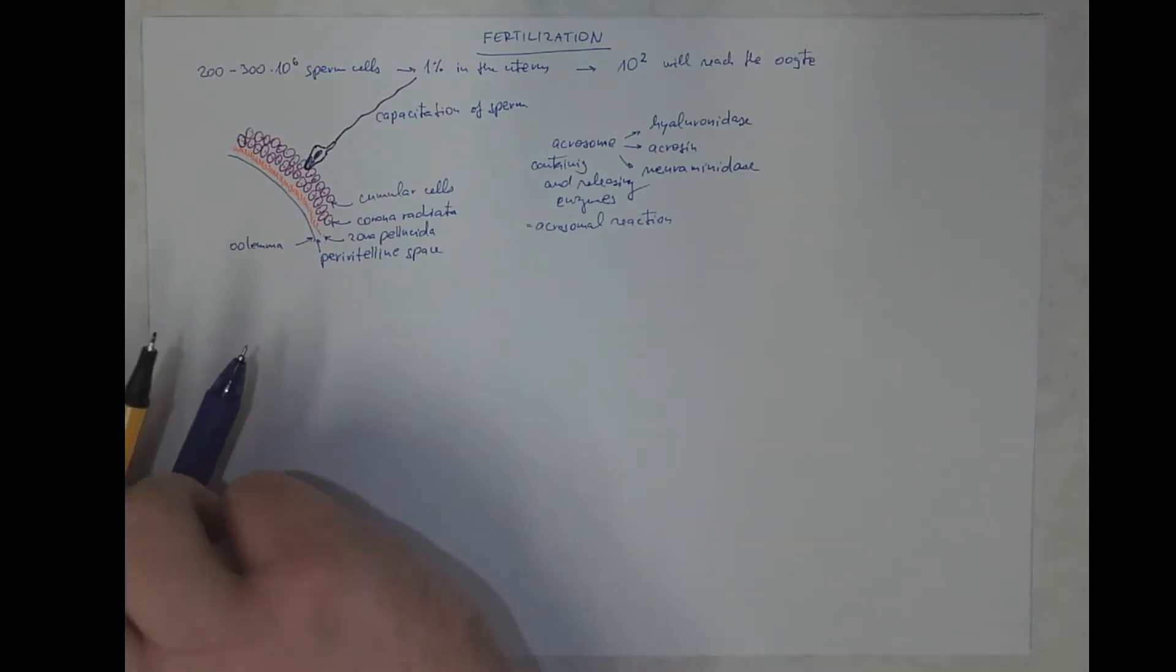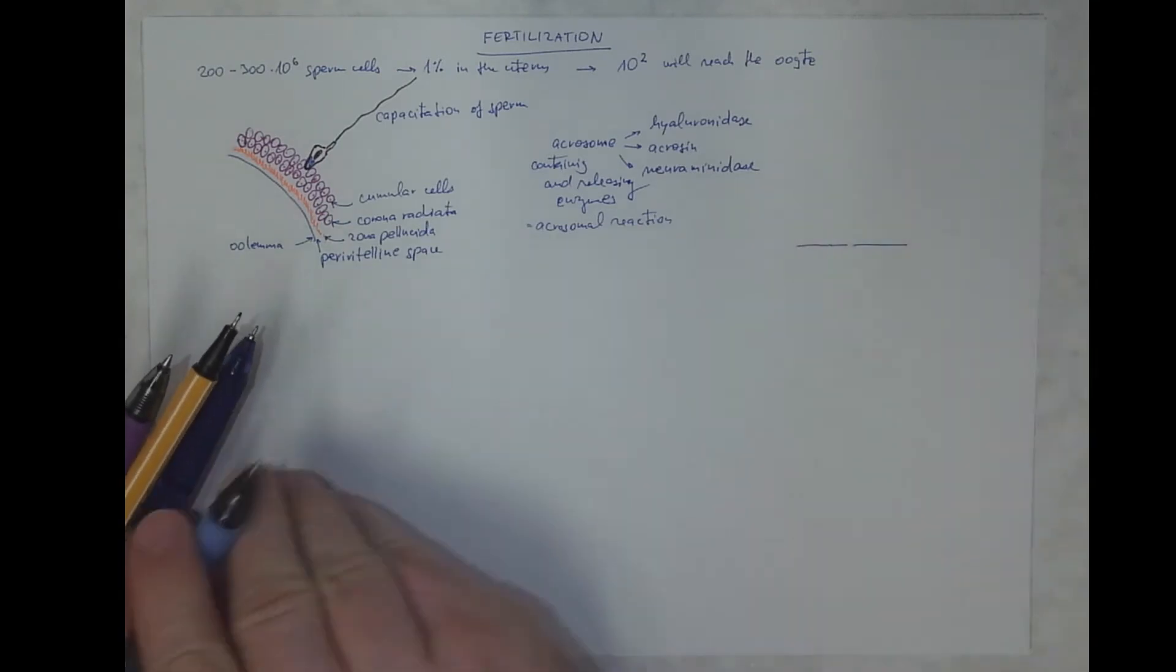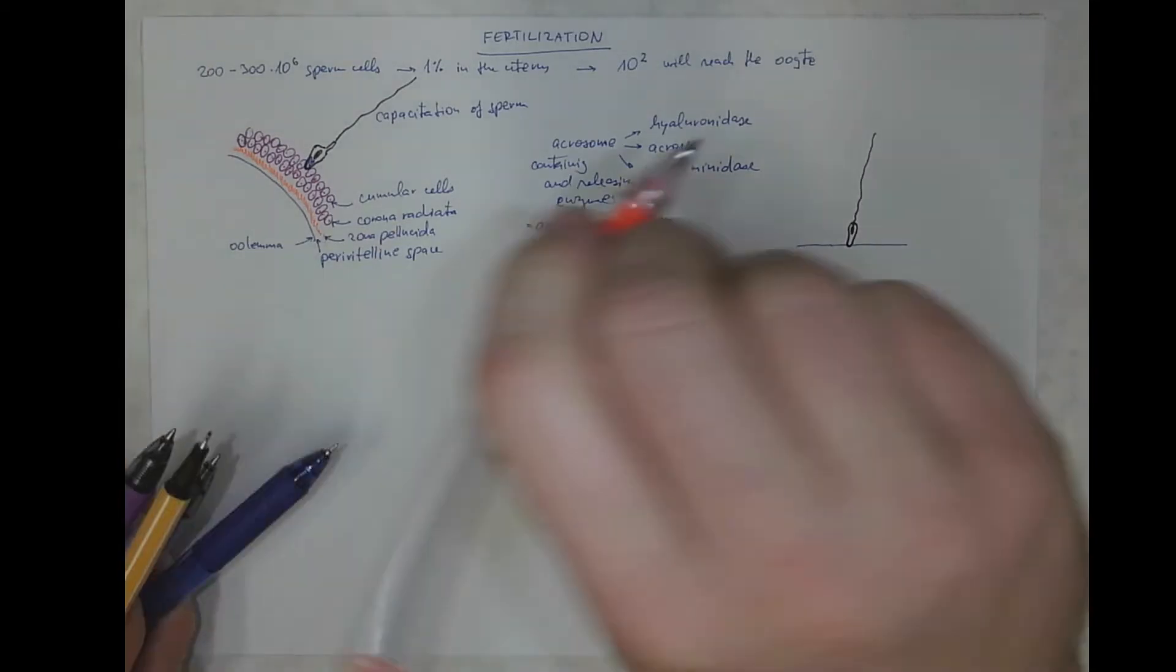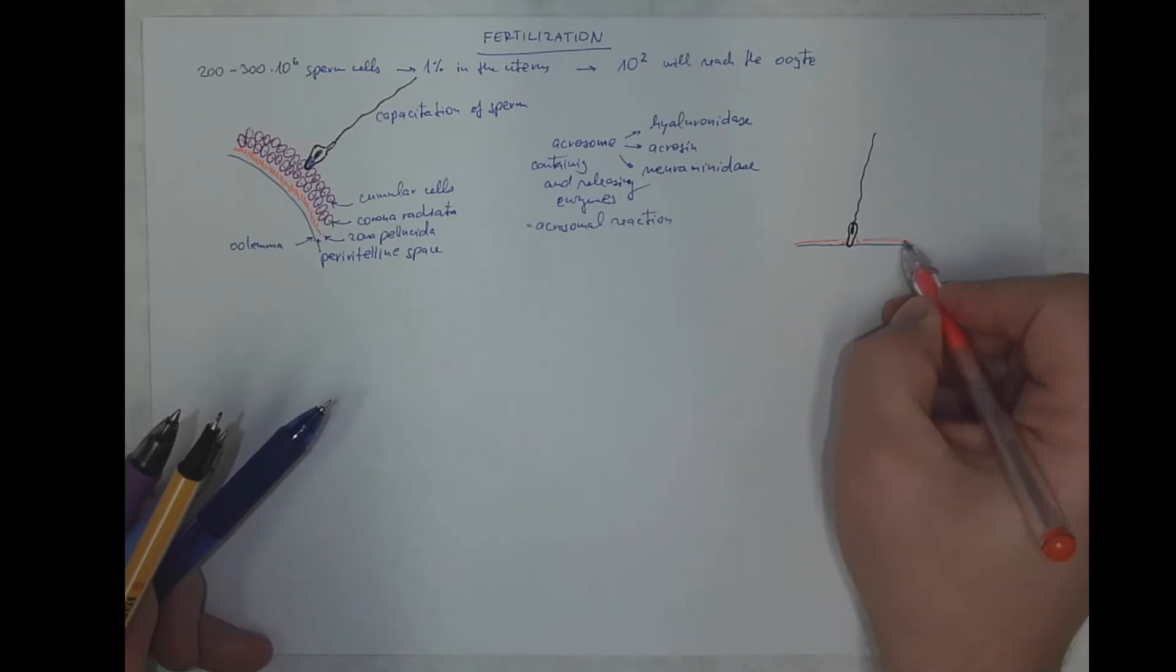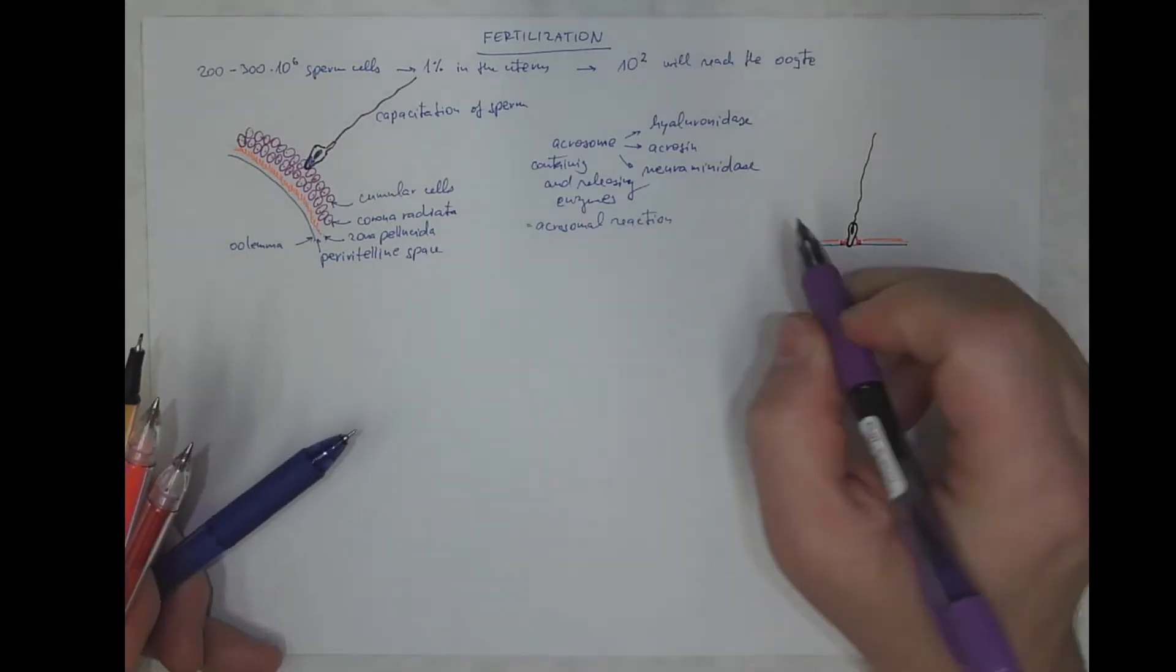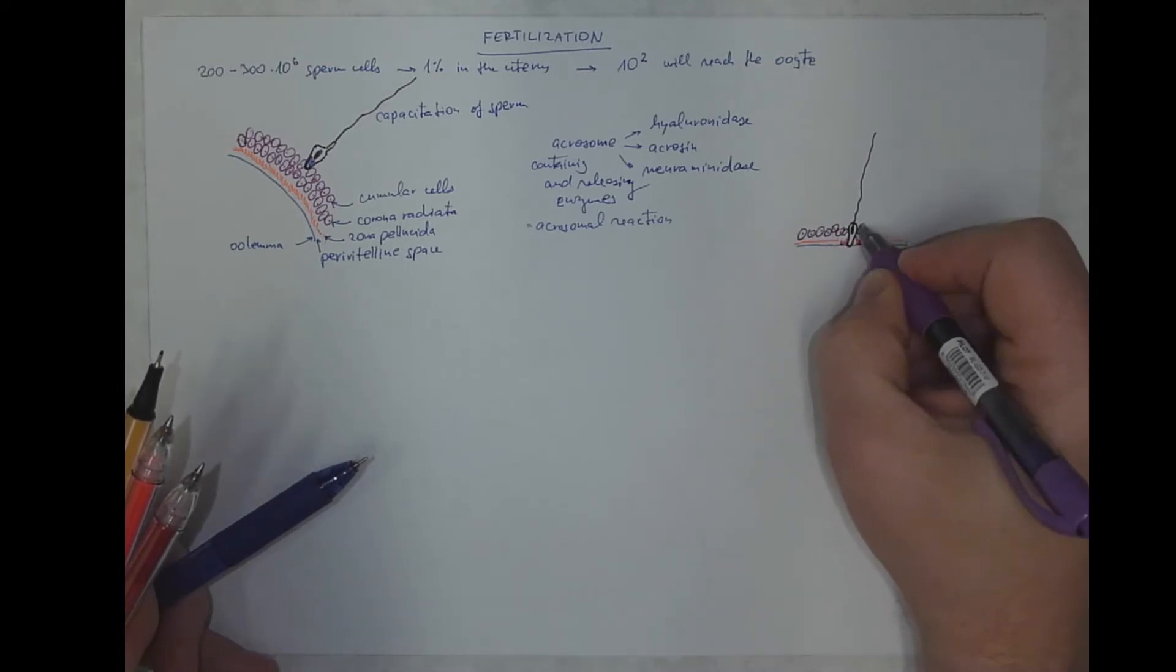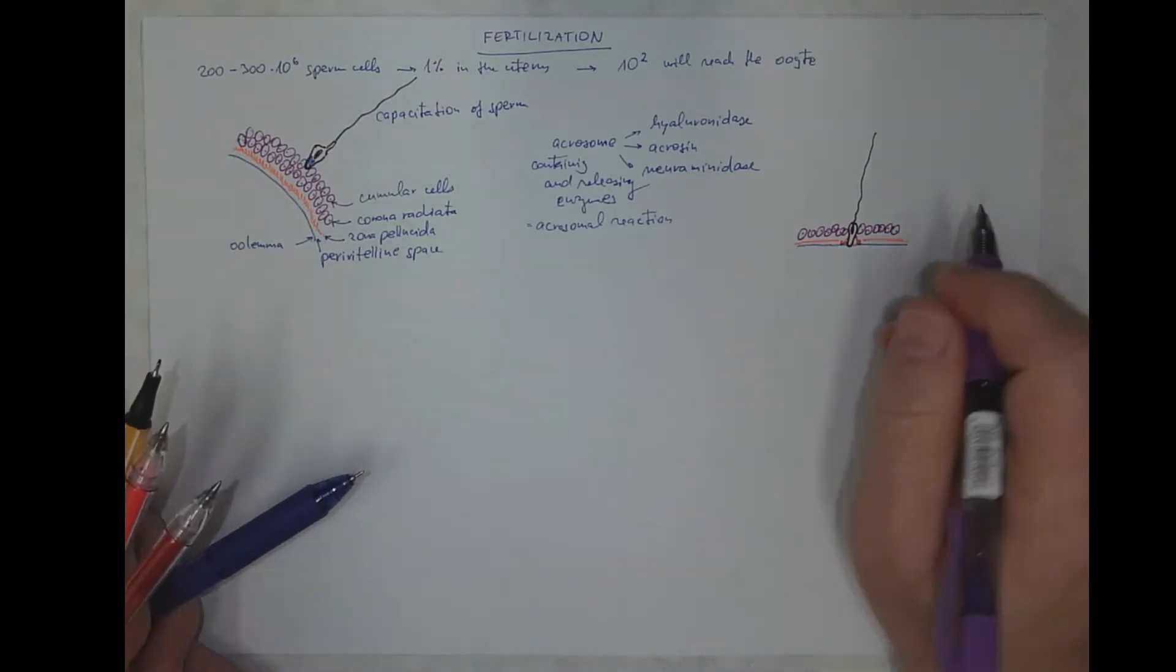So during this, the head of the sperm will penetrate through all the layers with the help of these enzymes. So we got a hole here in the zona pellucida. Perhaps I should mark the enzymes with different color. We got a hole in the corona radiata and we got adhesion and finally penetration through the oolemma.